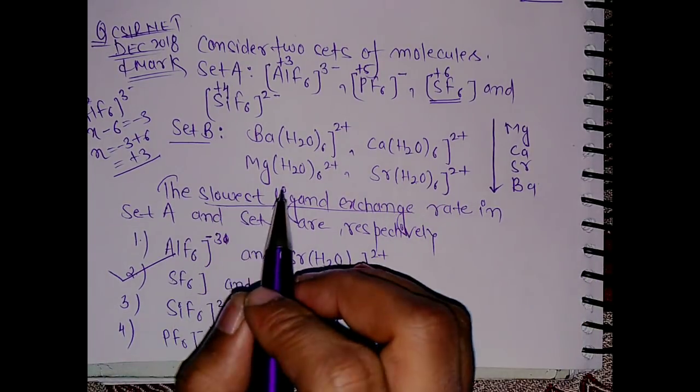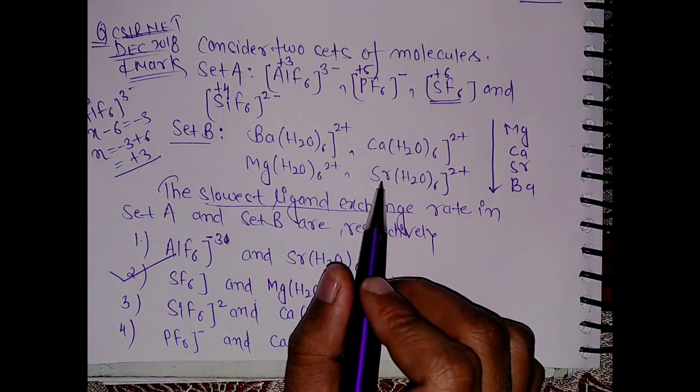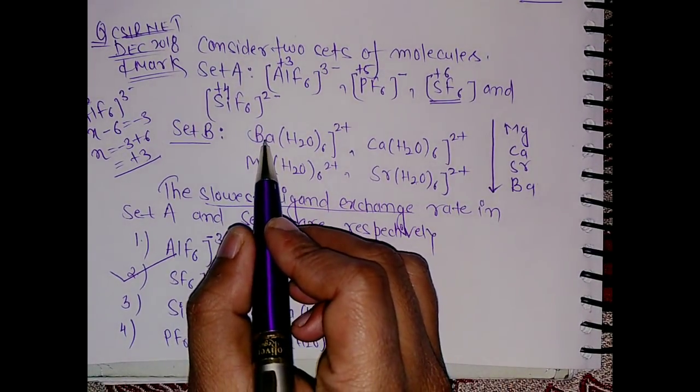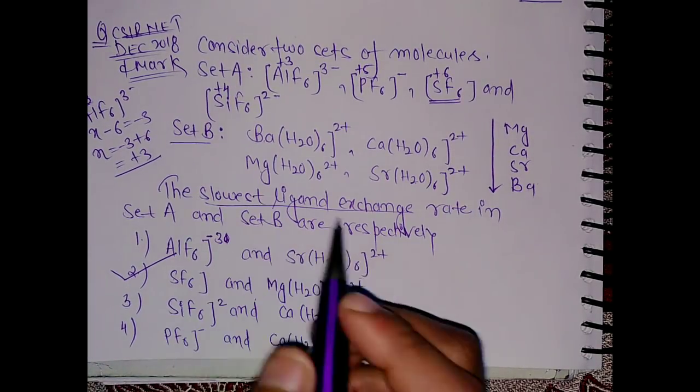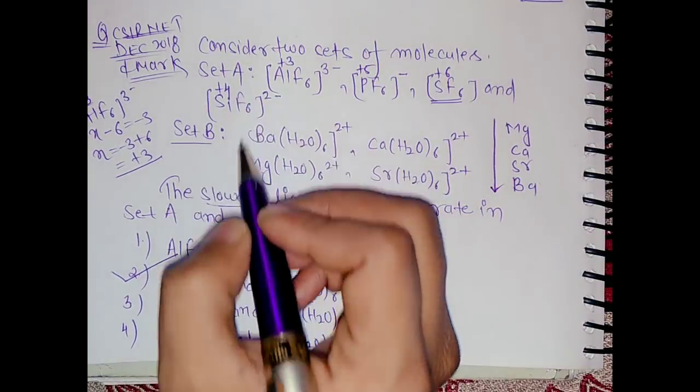So the fastest rate of the ligand exchange will be maximum in barium and the slowest in magnesium. So the slowest will be in magnesium, and for Set A we have already calculated.